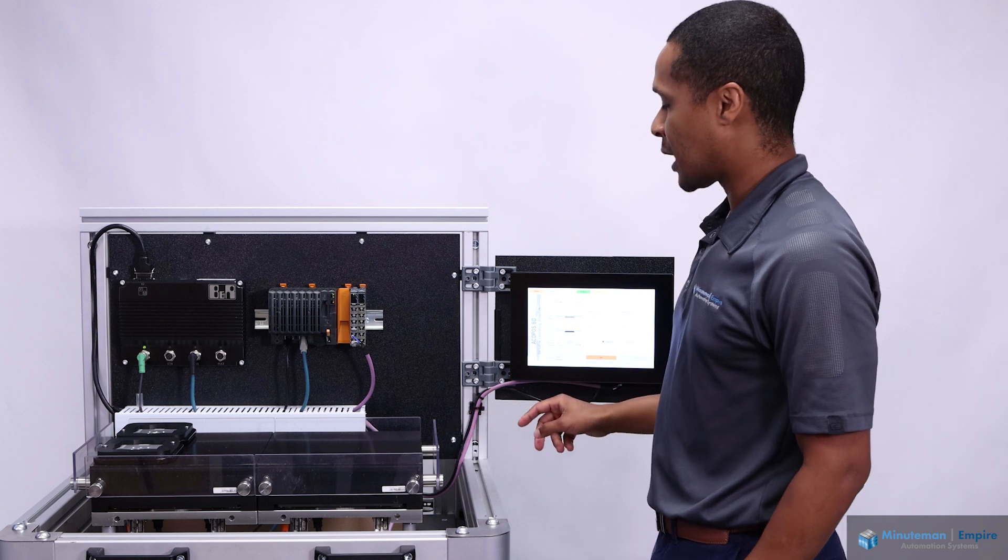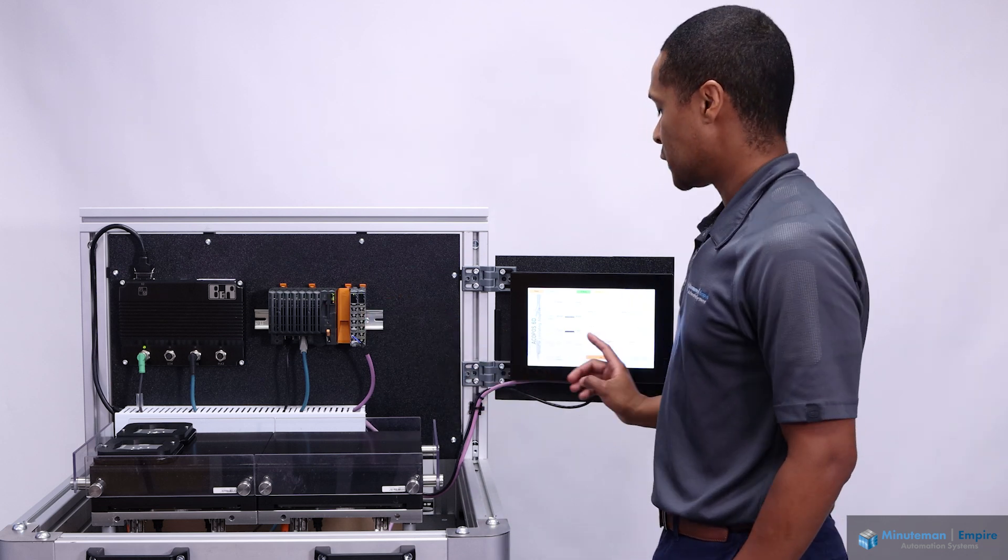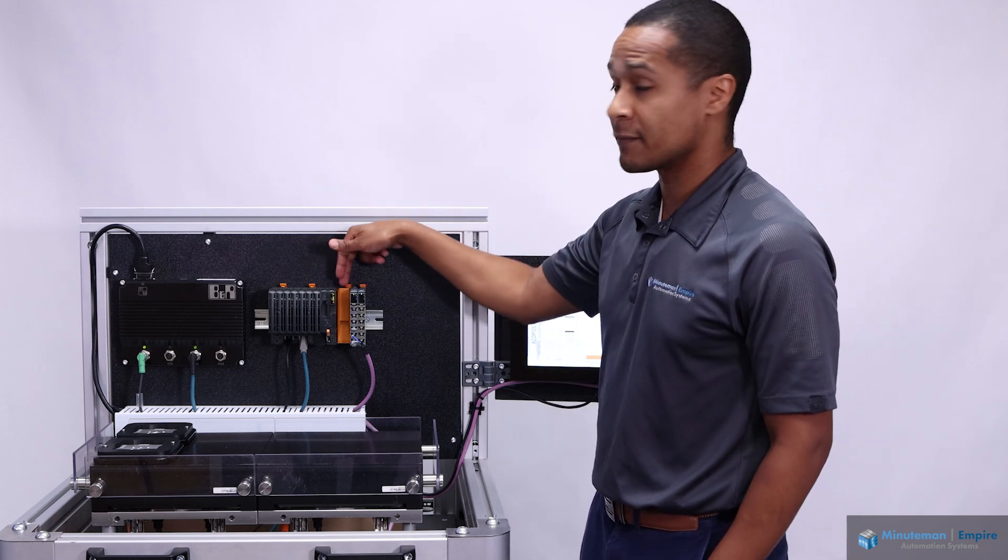This purple cable here is the power cable for 24 volts for both the x20 PLC and the BNR HMI. And this empty spot here is for a field bus card.